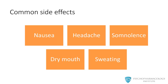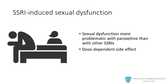The most common side effects are nausea, headache, somnolence, dry mouth, and sweating. Nausea can affect treatment adherence, and we'll see in a minute what the manufacturer did to reduce this side effect. All SSRIs can produce sexual dysfunction; however, it is more problematic with paroxetine than with other SSRIs. This is a dose-dependent side effect and we should consider it before prescribing paroxetine.